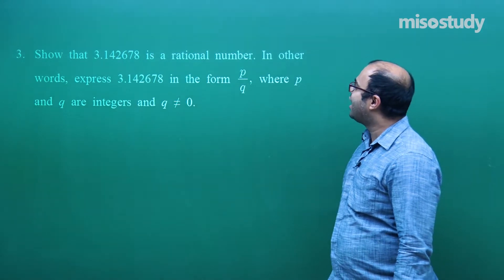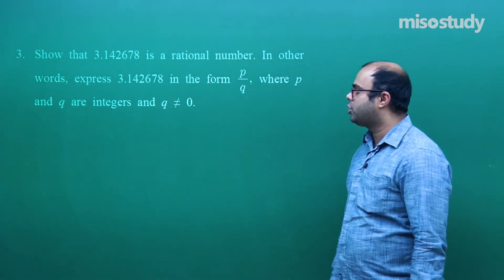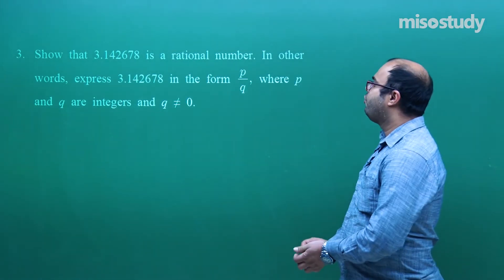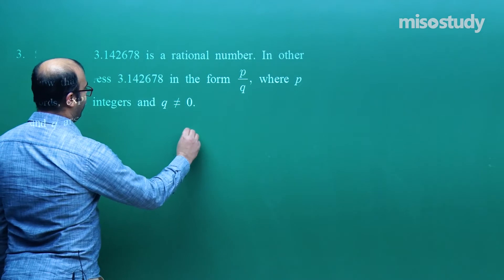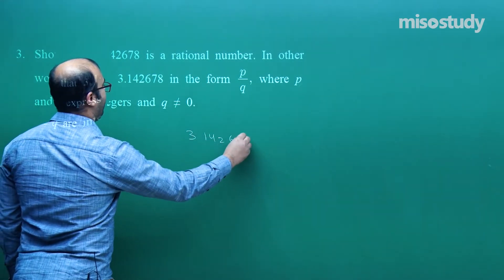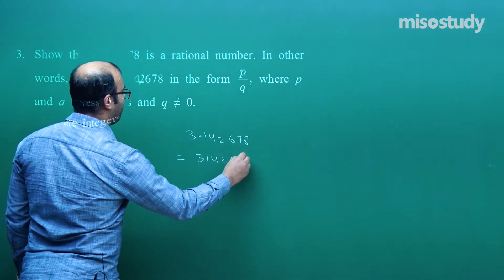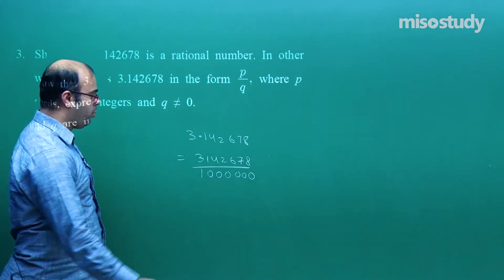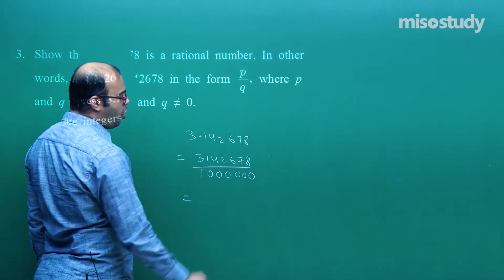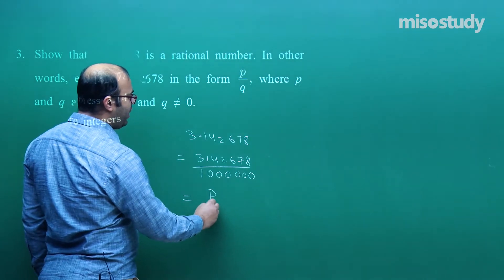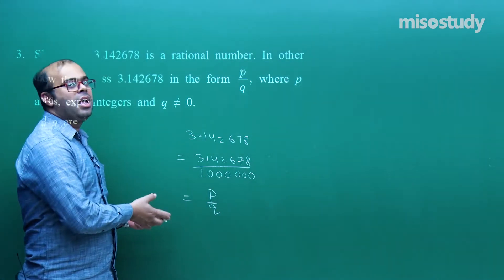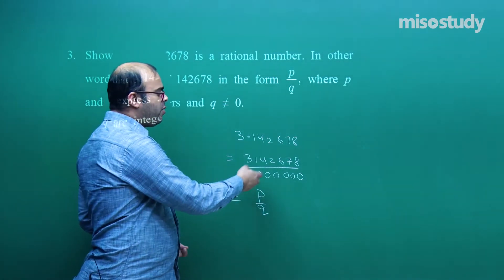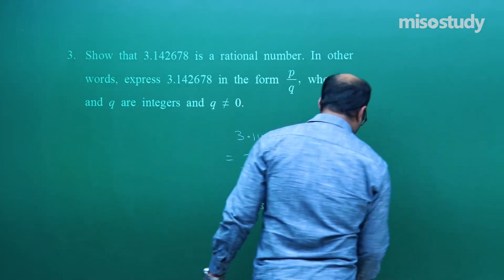Third question: show that 3.142678 is a rational number — in other words, express it in the form p/q where p and q are integers and q ≠ 0. We can write 3.142678 as 3142678/1000000. We remove the decimal and place that many zeros in the denominator. We can then divide by a common factor to get the reduced form p/q. Both are integers and q is not equal to 0, so it is a rational number.